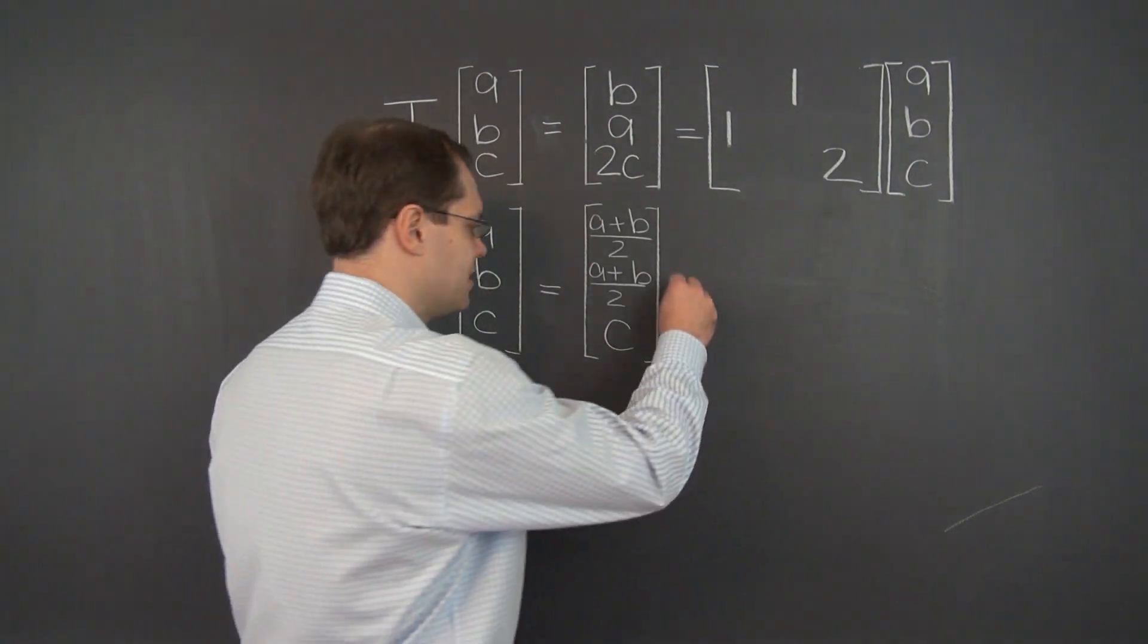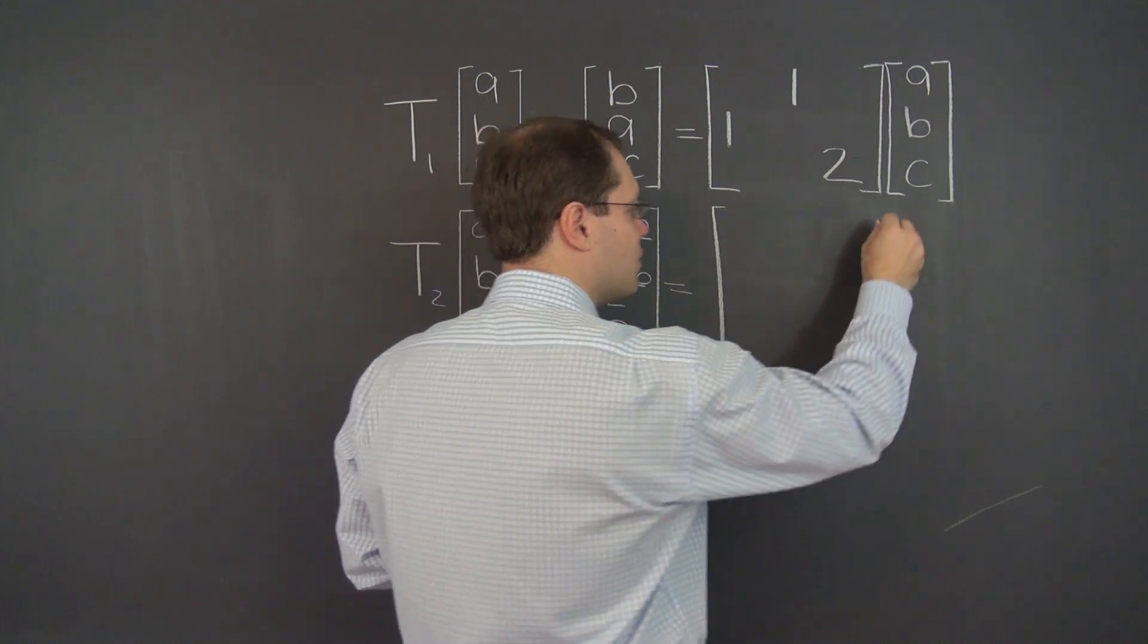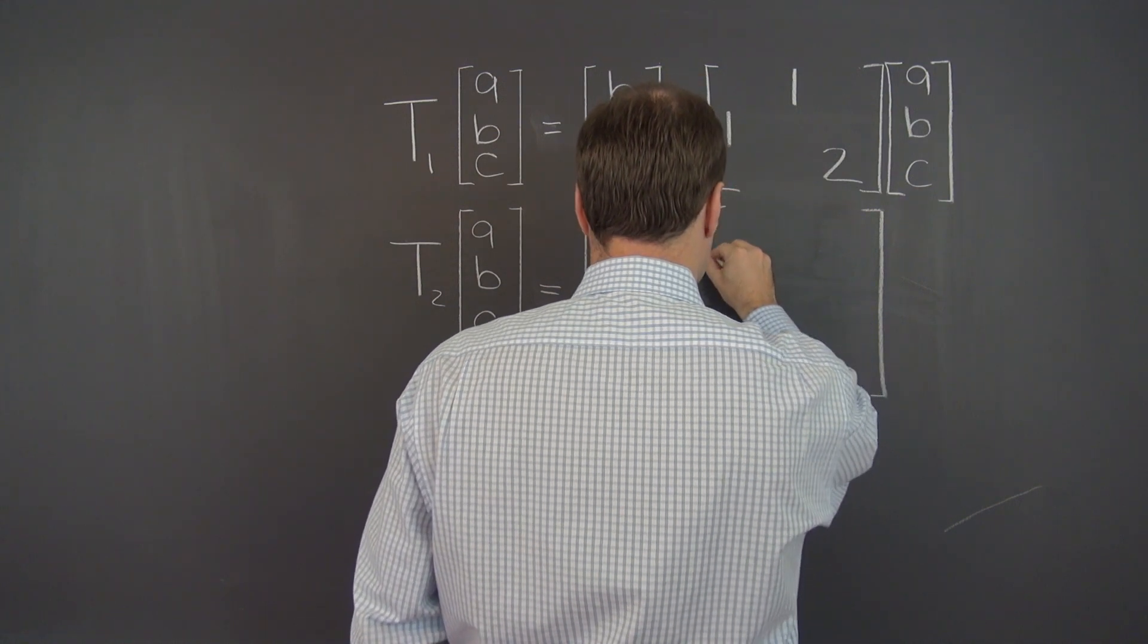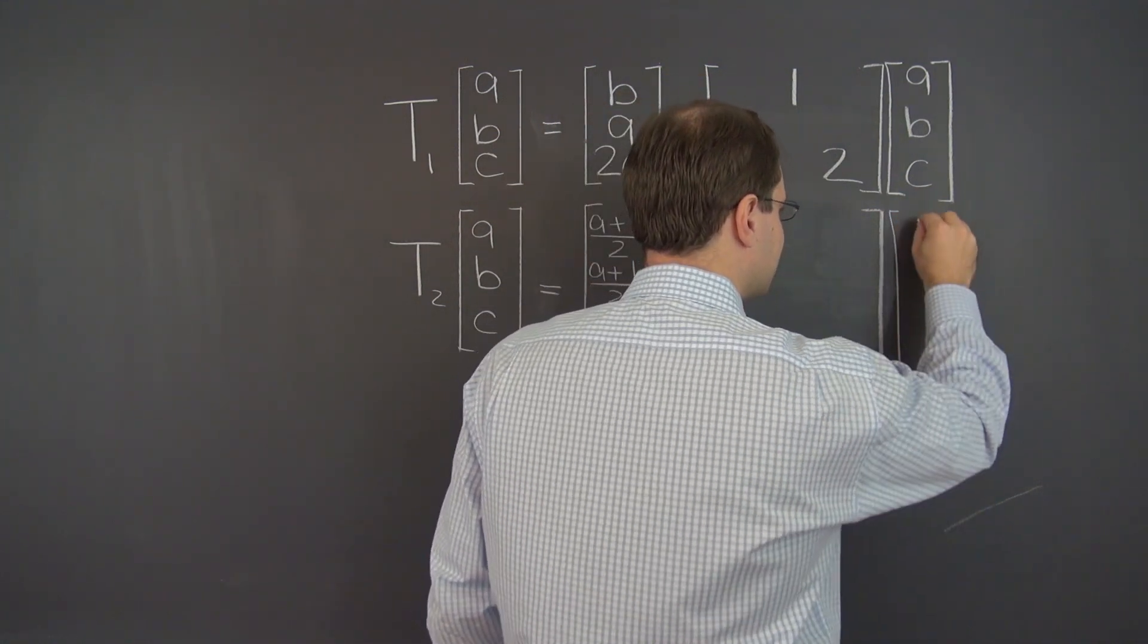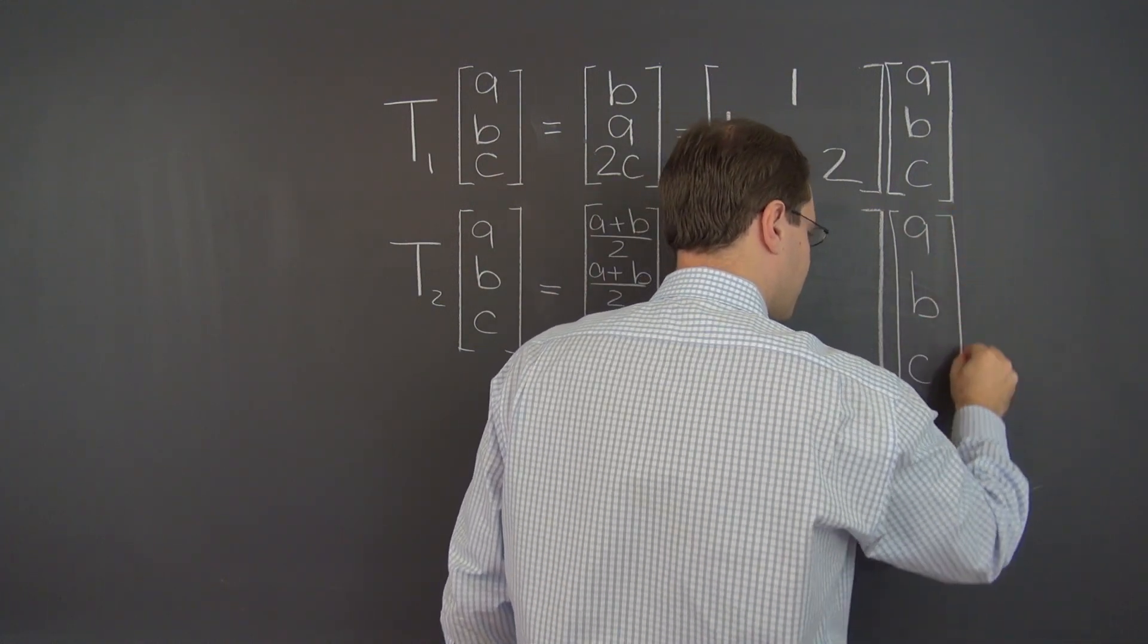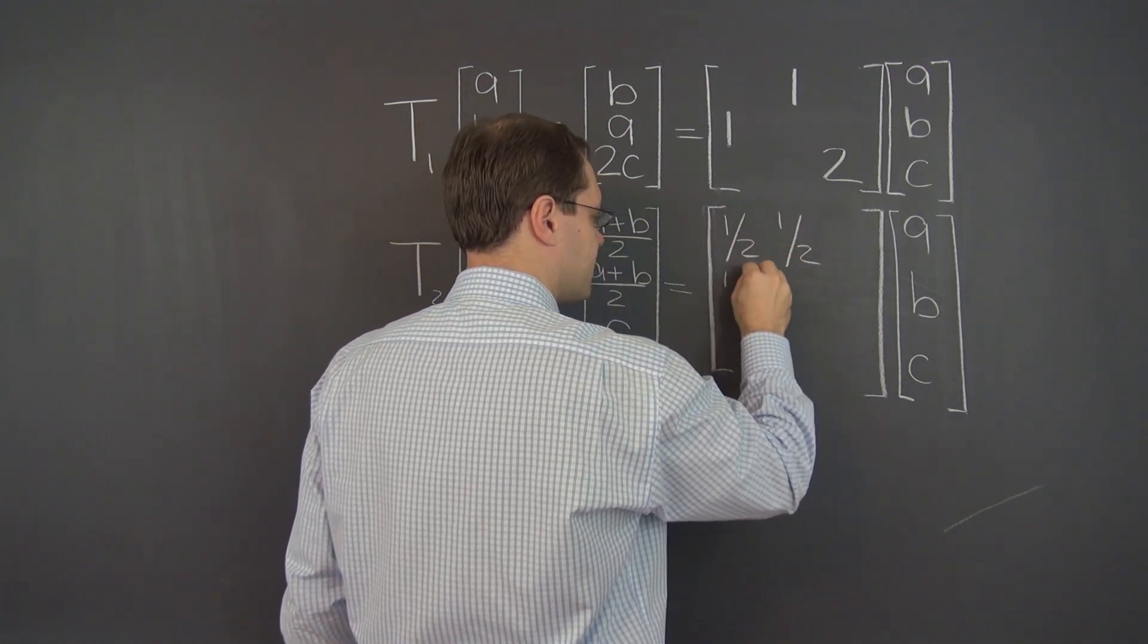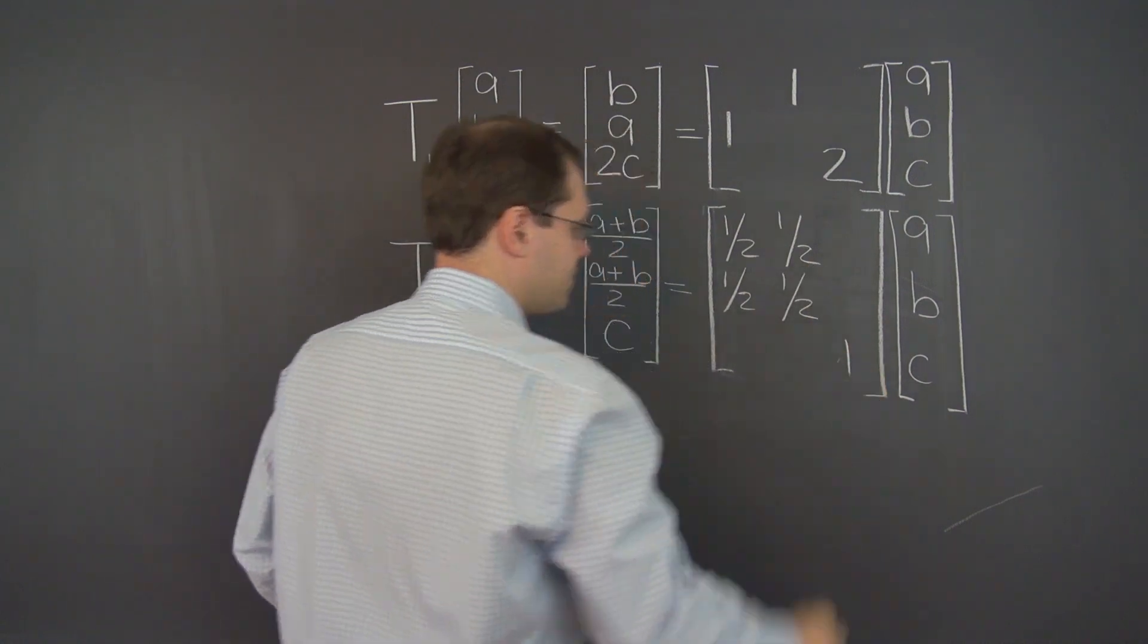What about this one? Same thing here. You should maybe pause the video and decide on what the entries of the matrix are. Now, once again, the input vector is ABC. And it gets multiplied by this matrix.